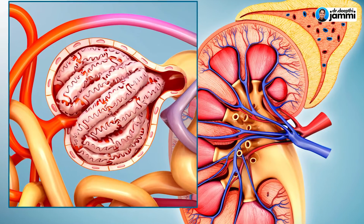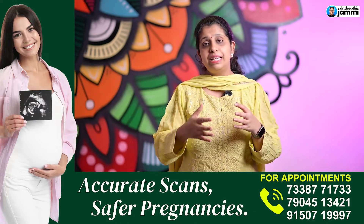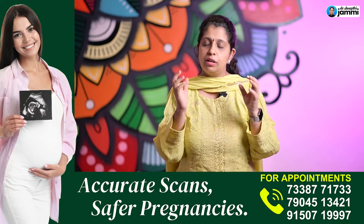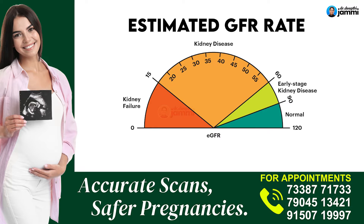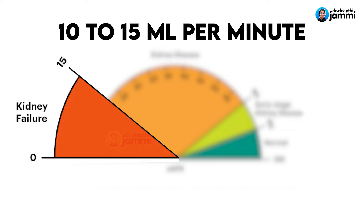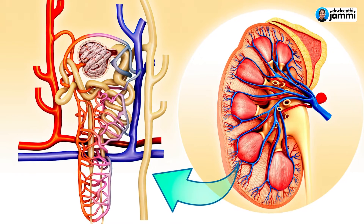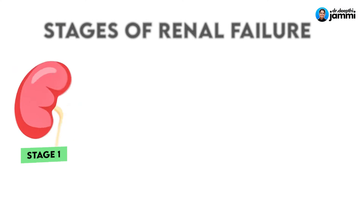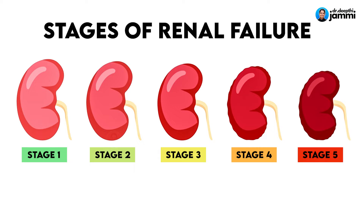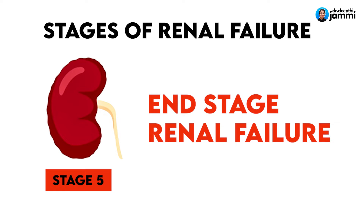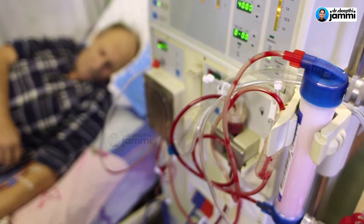The Glomerular Filtration Rate, or GFR, tells us how well our kidneys are filtering. In end-stage renal disease, we provide long-term dialysis therapy. This is not a cure, but it maintains the patient. The actual cure is a kidney transplant — if a suitable donor and recipient match is available, we go for a renal transplant; otherwise, we continue with dialysis.